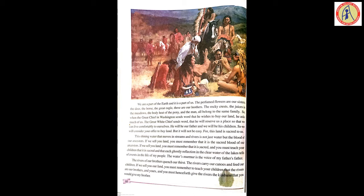'We are part of the earth and it is part of us. The perfumed flowers are our sisters. The deer, the horse, the great eagles — these are our brothers. The rocky crests, the juices in the meadows, the body heat of the pony and the man — all belong to the same family.' So when the great chief in Washington sends word that he wishes to buy our land, he asks much of us.